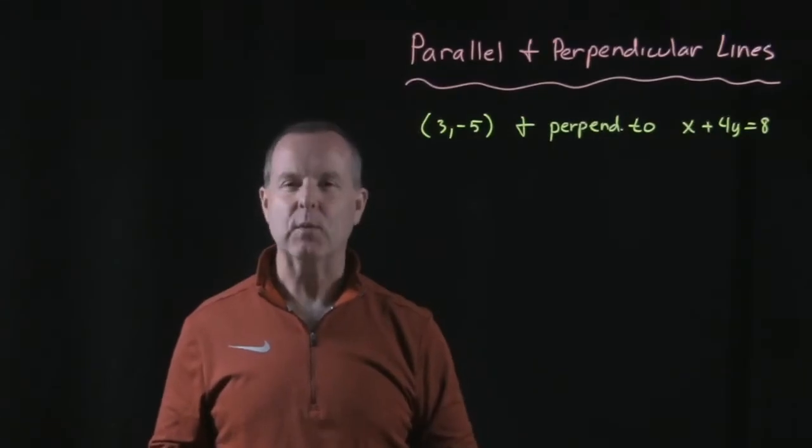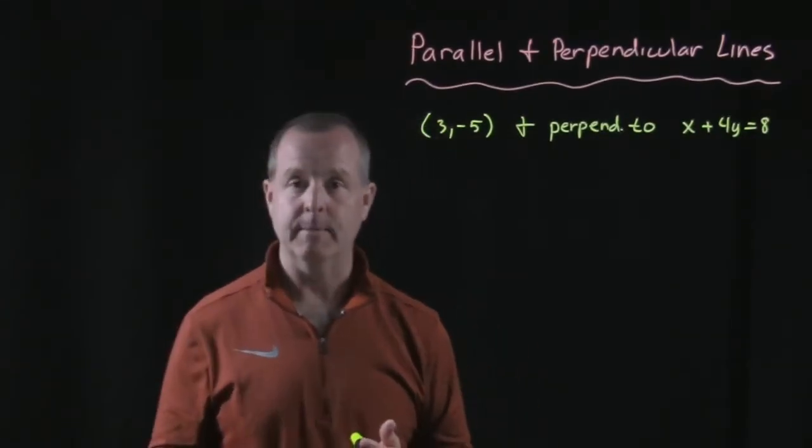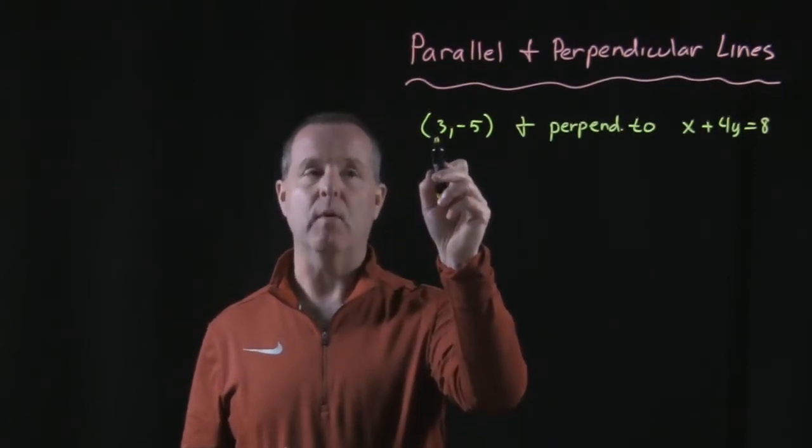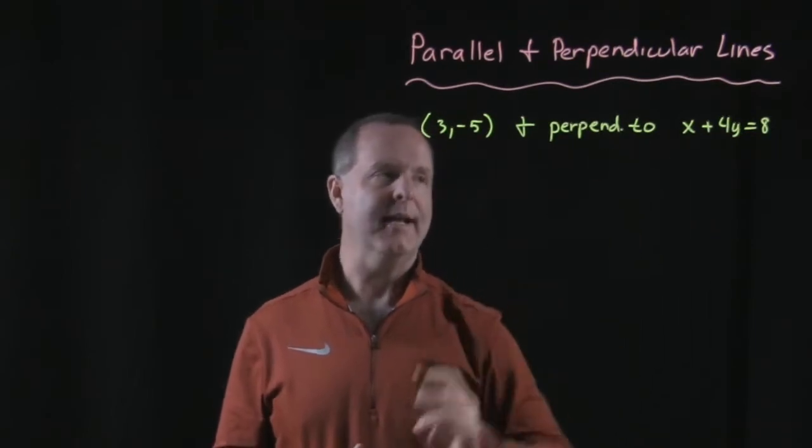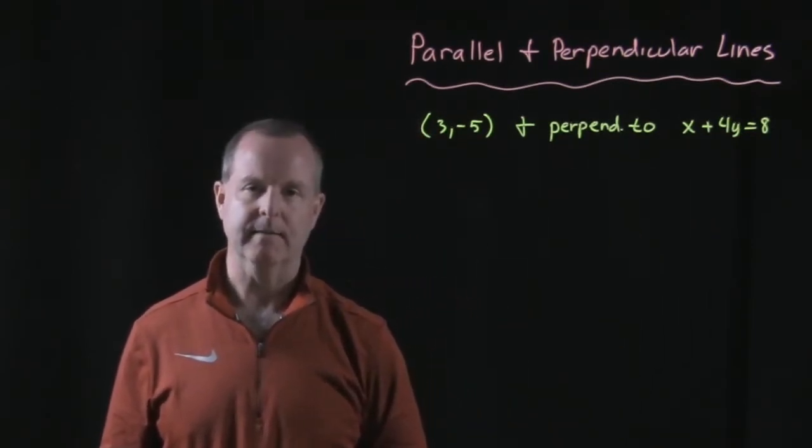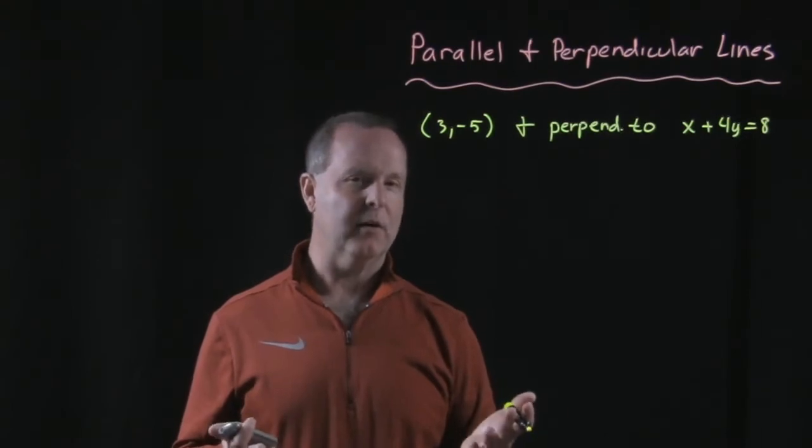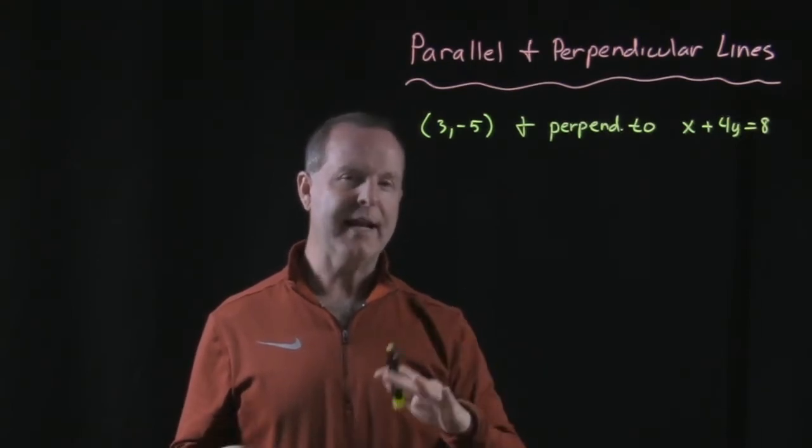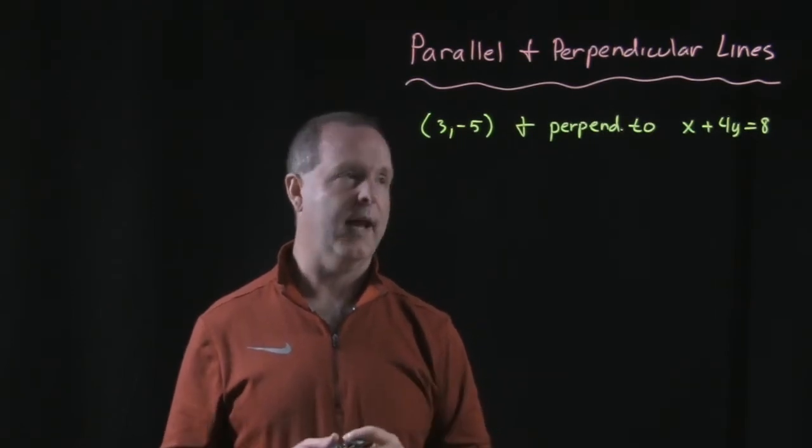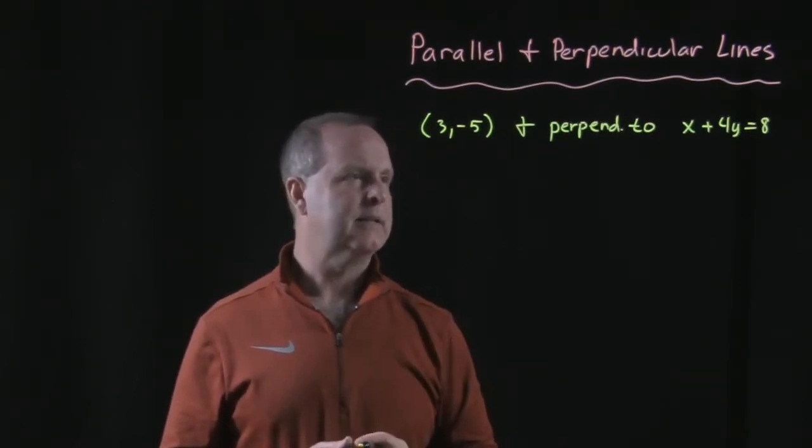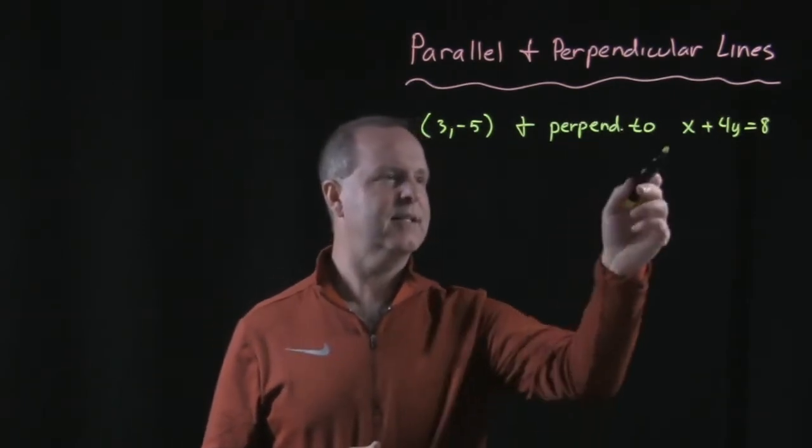This one's got a few things that we need to figure out. I want to find the equation of a line that passes through the point (3, -5) but is perpendicular to x + 4y = 8. So I remember that perpendicular lines have slopes that are negative reciprocals of each other. I can't find the slope of that line right there. That's in standard form.